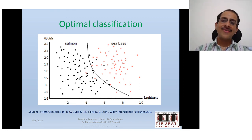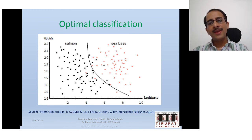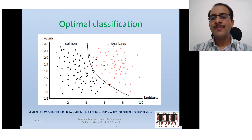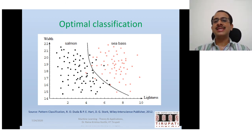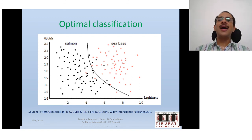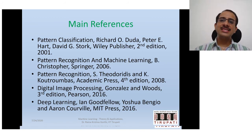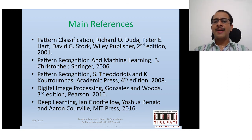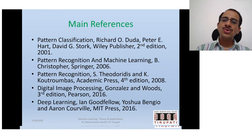The general trend in developing classifiers is to look at class 1 and class 2 samples and figure out the best way to separate them. The decision boundary can be obtained either through probabilistic or statistical approaches, or directly through algebraic or discriminant function-based approaches. Main references for this course include Pattern Classification by Duda, Hart, and Stork — a very standard and elegant book — as well as Pattern Recognition and Machine Learning by Christopher Bishop, and Theodoridis and Koutroumbas for some pattern recognition problems.